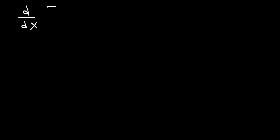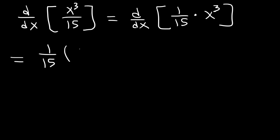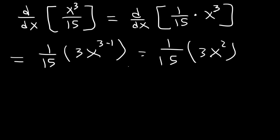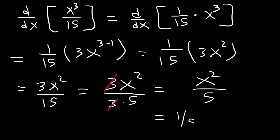Here's another one: what is the derivative of x cubed divided by 15? Let's rewrite it. The constant is 1 over 15, multiplied by x cubed. Using the constant multiple rule, it's going to be 1 over 15 times the derivative of x cubed, which is 3x to the 3 minus 1. 3 minus 1 is 2, so it's 3x squared divided by 15. Since 15 is 3 times 5, and 3 divided by 3 is 1, we can cancel the 3. The final answer is x squared over 5, or 1/5 times x squared.